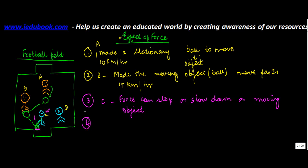Fourth impact. When A had struck the ball it was moving in this direction. If B wouldn't have come, the ball would have straight away gone like this and would have gone outside the playing area. But by applying force, what B did was on this moving ball — he made it move in a different direction. So the fourth impact of force is that it can change the direction of a moving object.